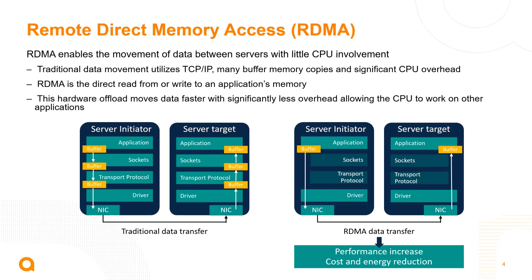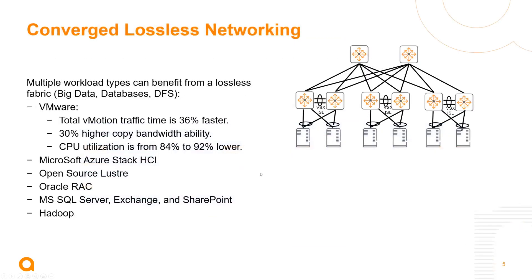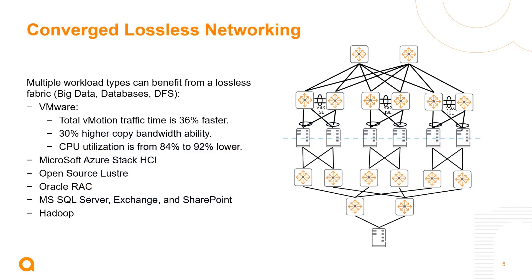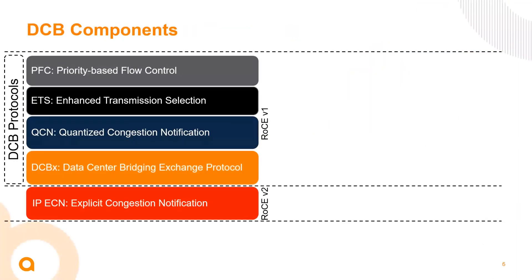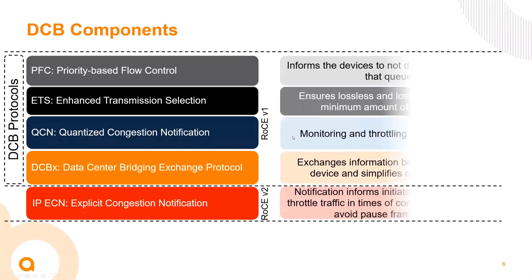DCB solutions do enable converged networking. Because these solutions largely leverage Ethernet, they can be deployed in converged solutions or in side-by-side separate fabric solutions. A lot of customers in the medium to small enterprise will deploy these in a converged environment to help save on infrastructure costs. Here's an overview of the data center bridging protocols and how they can actually help when deployed on a network.